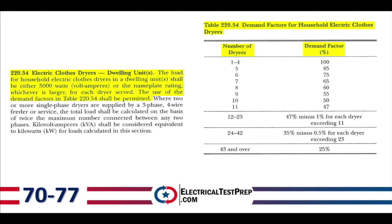Section 220.54, Electric Clothes Dryers. The load for household electric clothes dryers shall be either 5,000 watts or the nameplate rating, whichever is larger, for each dryer served. Table 220.54 demand factors may be used when there are multiple dryers, such as in a multifamily dwelling. Even using Table 220.54, the minimum for an electric clothes dryer in the standard method calculation is 5,000 watts.